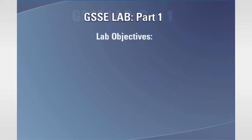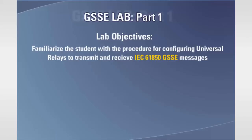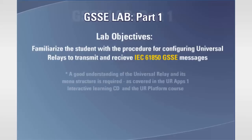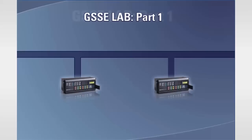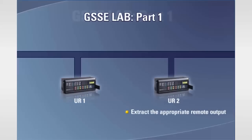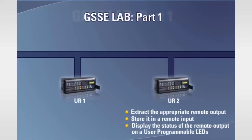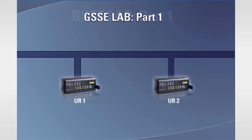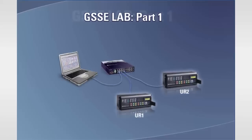The objective of this lab is to familiarize the student with the procedure for configuring universal relays to transmit and receive IEC 61850 GSSE messages. In this lab, the status of Control Push Button 1, located on Universal Relay 1, will be transmitted via a remote output within a GSSE message to Universal Relay 2. UR 2, upon receiving the message, will extract the appropriate remote output, store it in a remote input, and display the status of the remote output on one of UR 2's user programmable LEDs. The student requires two universal relays equipped with Ethernet ports, a multi-link switch, a computer preloaded with the UR EnerVista setup software, and the appropriate Ethernet cables. First, set up and test the Ethernet LAN using the ping command. Once this is done, configure UR 1 to transmit GSSE messages.